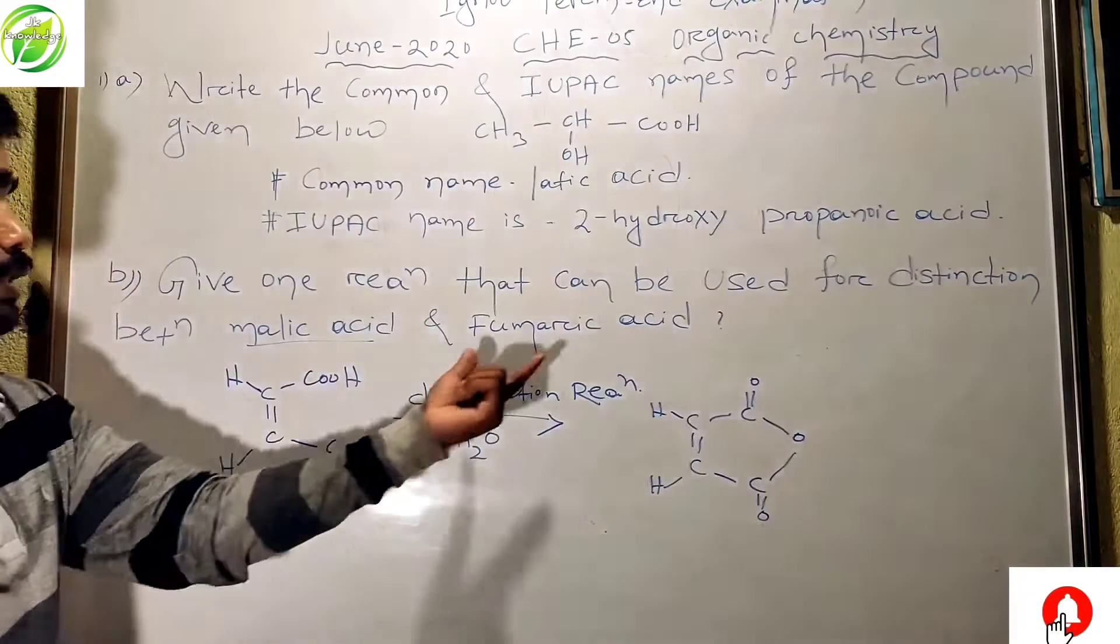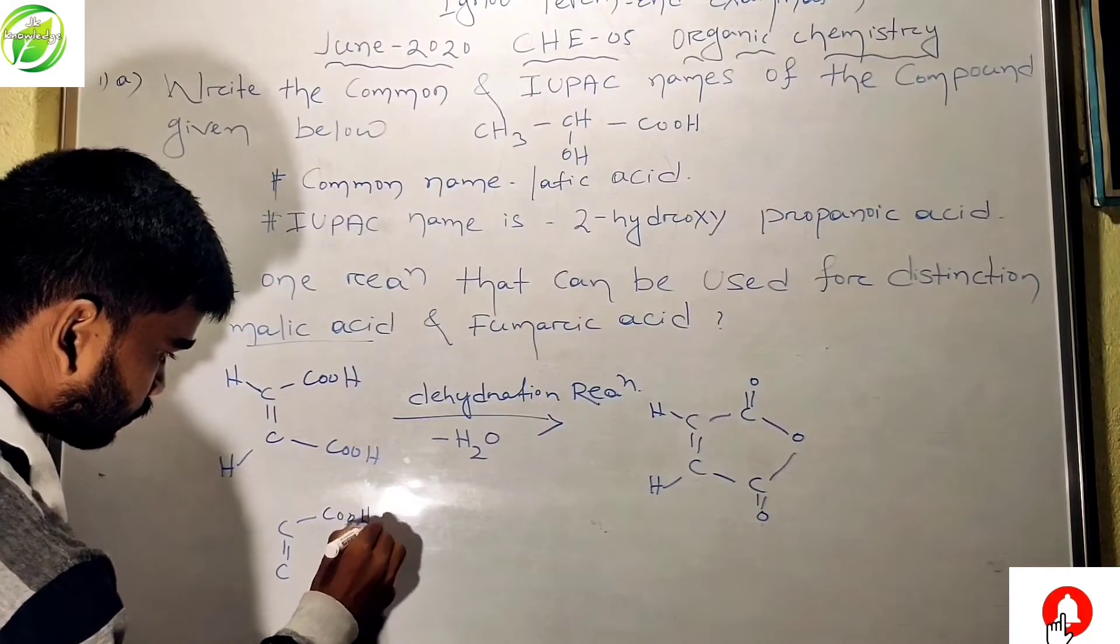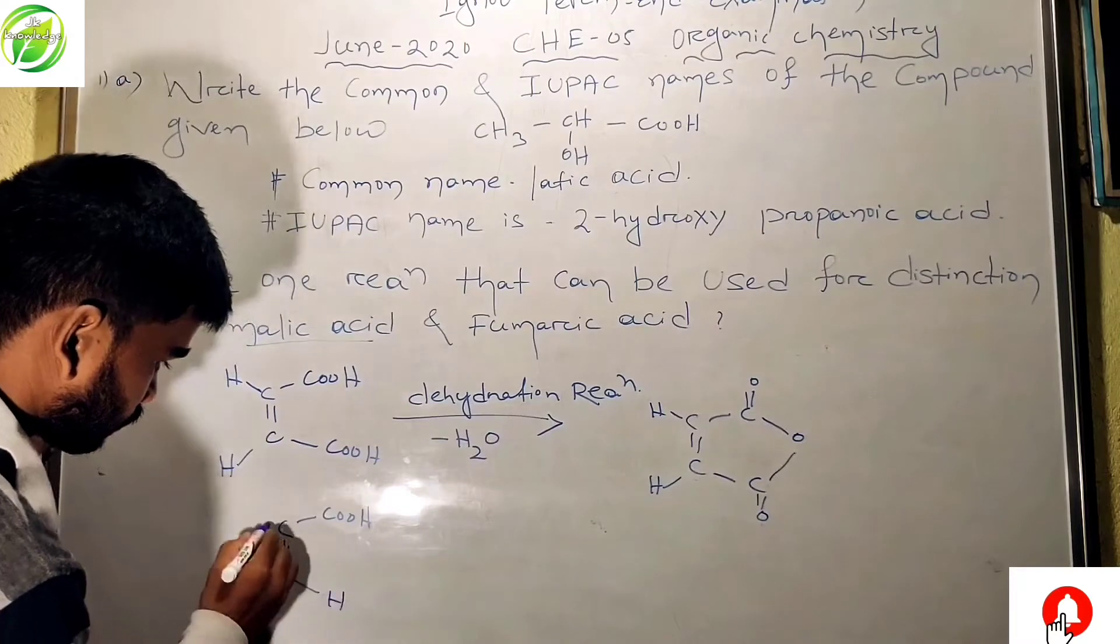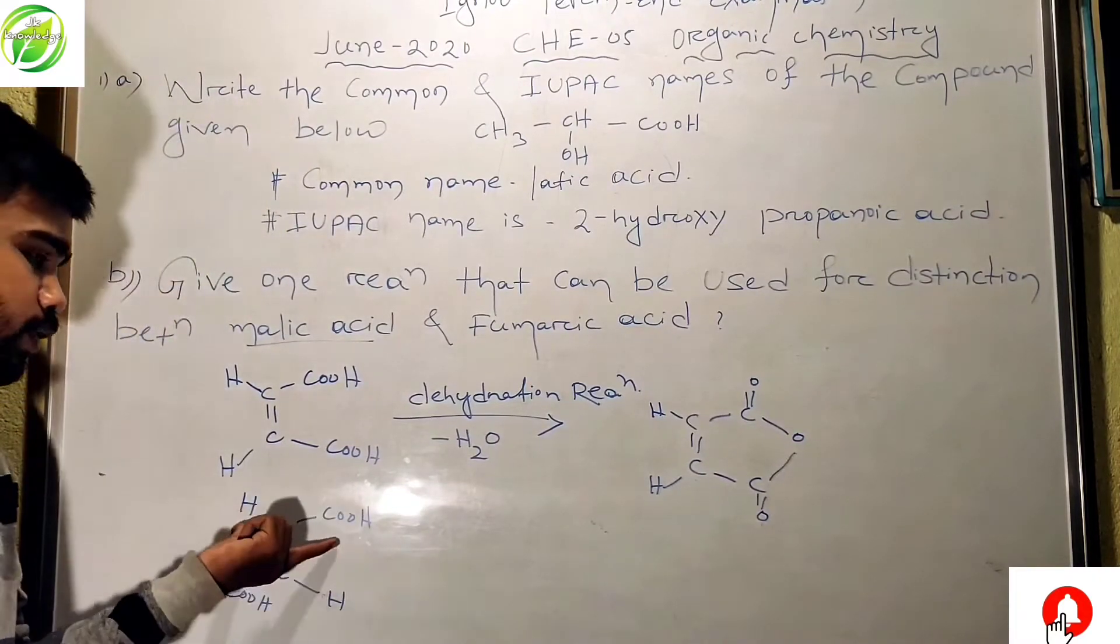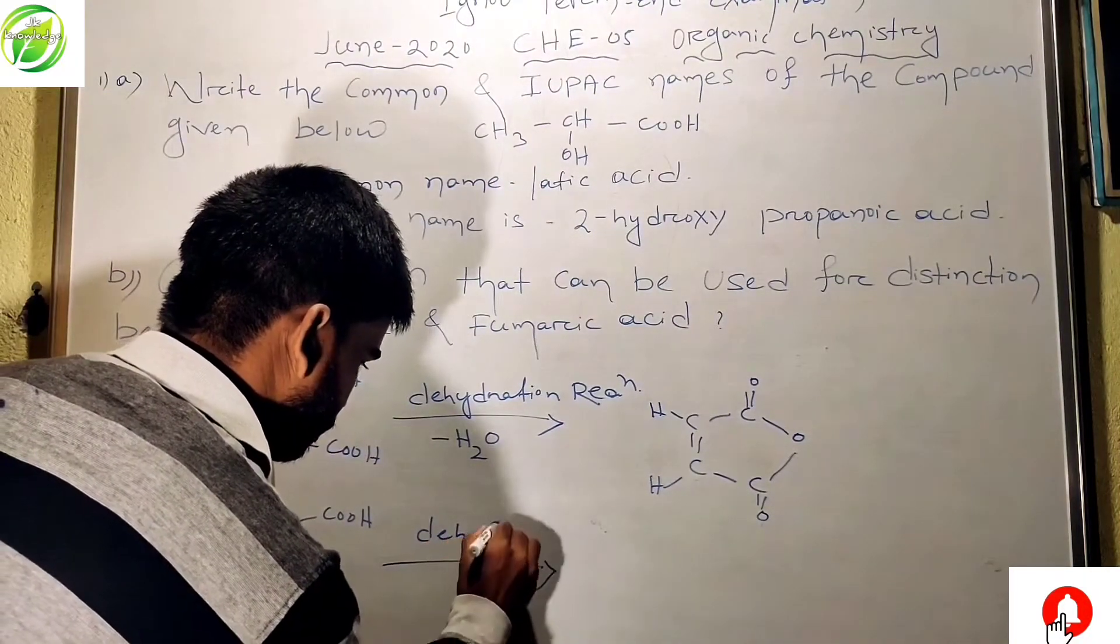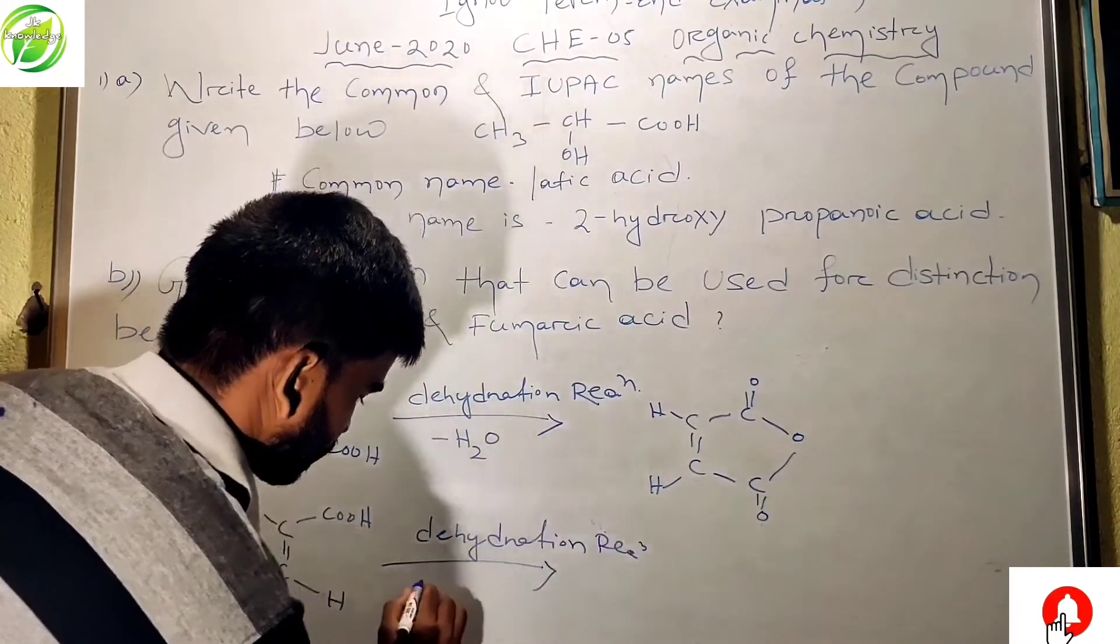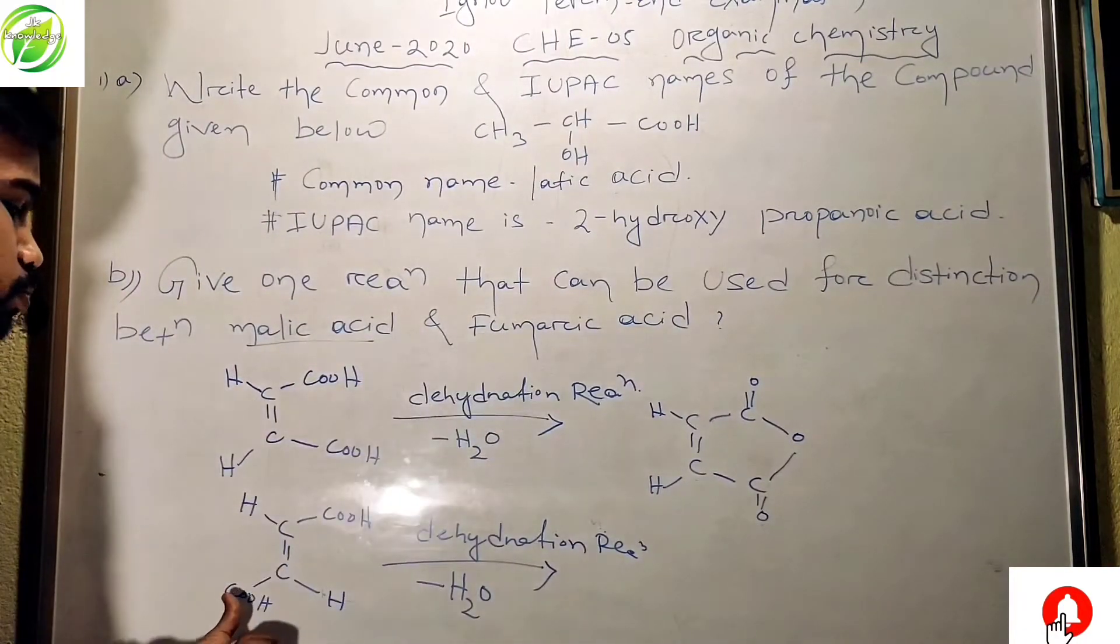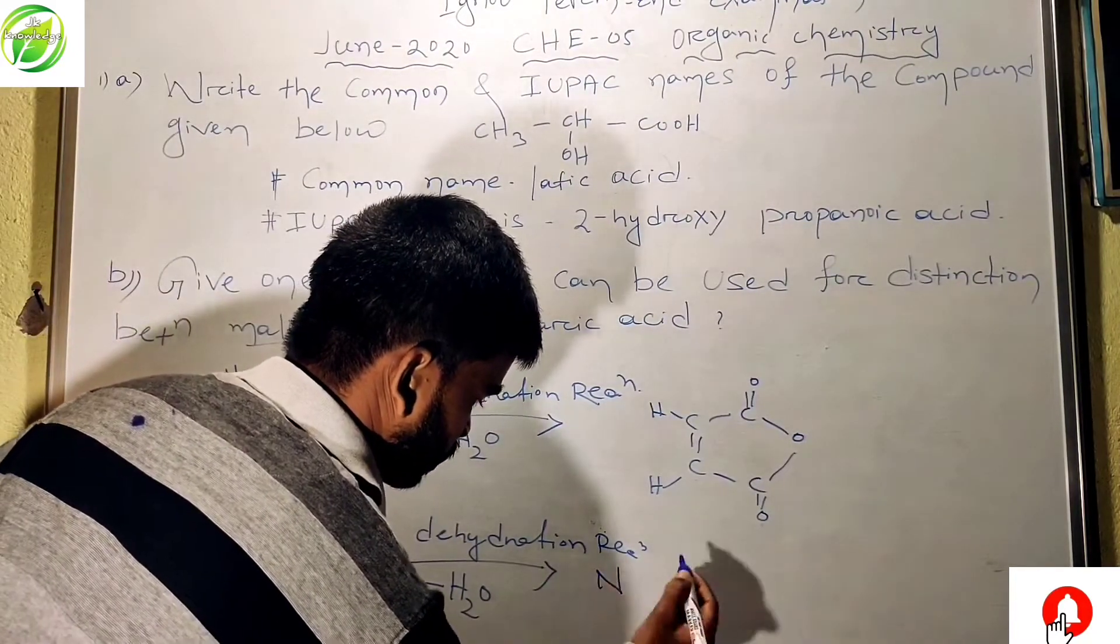But in the case of fumaric acid, the structure of fumaric acid... this fumaric acid goes through the dehydration reaction and the elimination of H2O, but this fumaric acid did not form its own anhydride, means this reaction does not take place. No reaction.